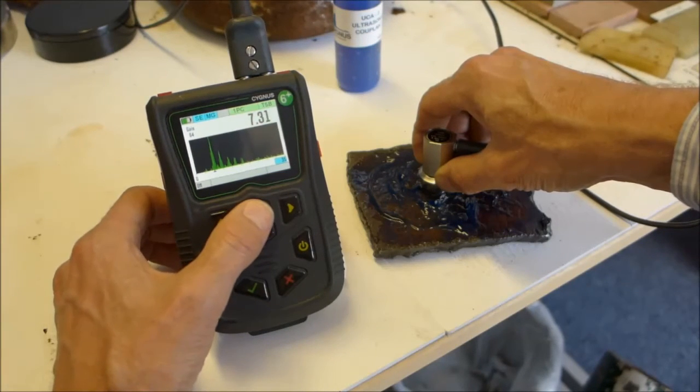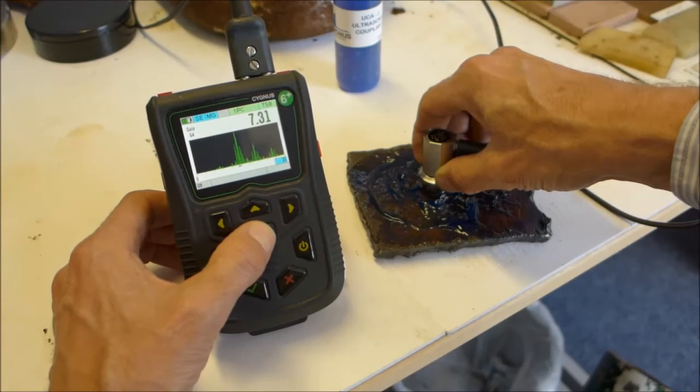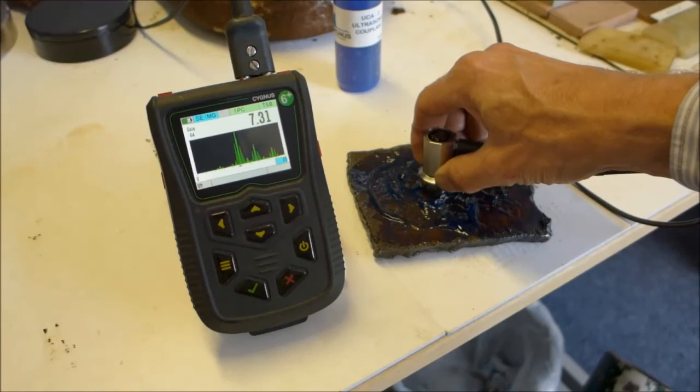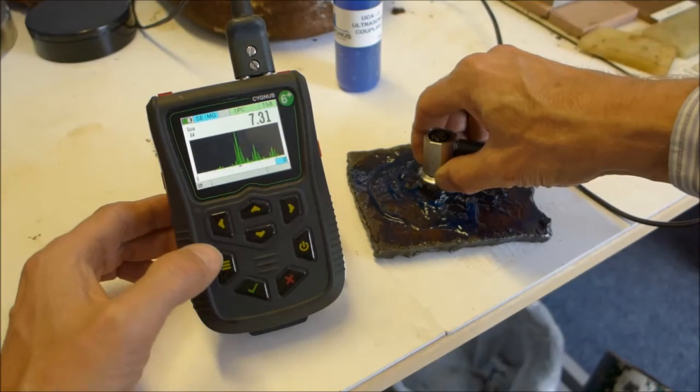So now the up and down keys can be used to reduce the range. I can bring the A scan more in line with the thickness that I am measuring.